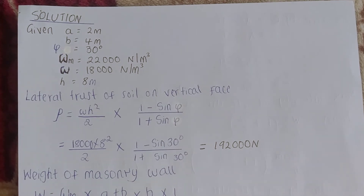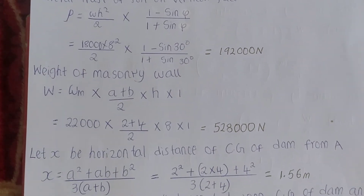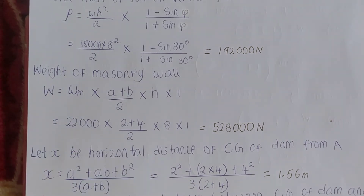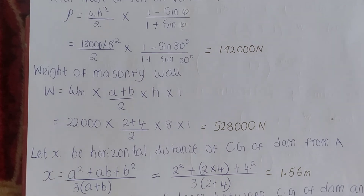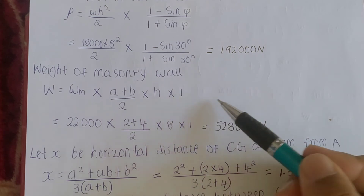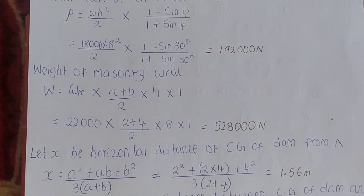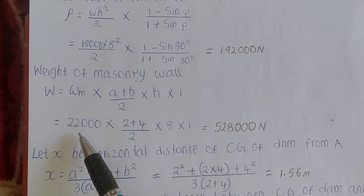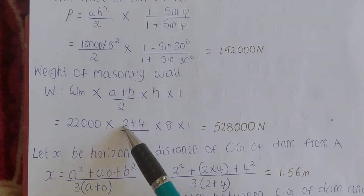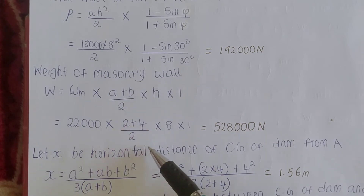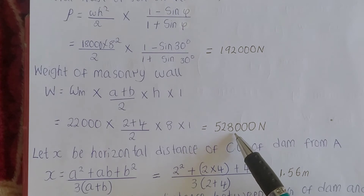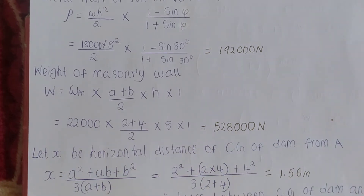Now we shall calculate the weight of the masonry wall. W equals the unit weight of masonry wall multiplied by (a + b) / 2 × height × 1, where the 1 is the unit length of one meter. Substituting: 22,000 × (2 + 4) / 2 × 8 × 1 = 528,000 Newtons. That is the weight of the masonry wall.